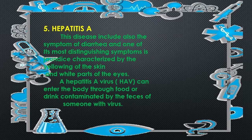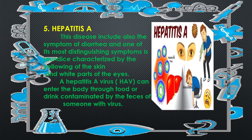Number five is Hepatitis A. This disease includes symptoms of diarrhea, and one of its most distinguishing symptoms is jaundice, characterized by the yellowing of the skin and white part of our eyes. The Hepatitis A virus, or what we call HAV, can enter the body through food or drink contaminated by the presence of someone with the virus.